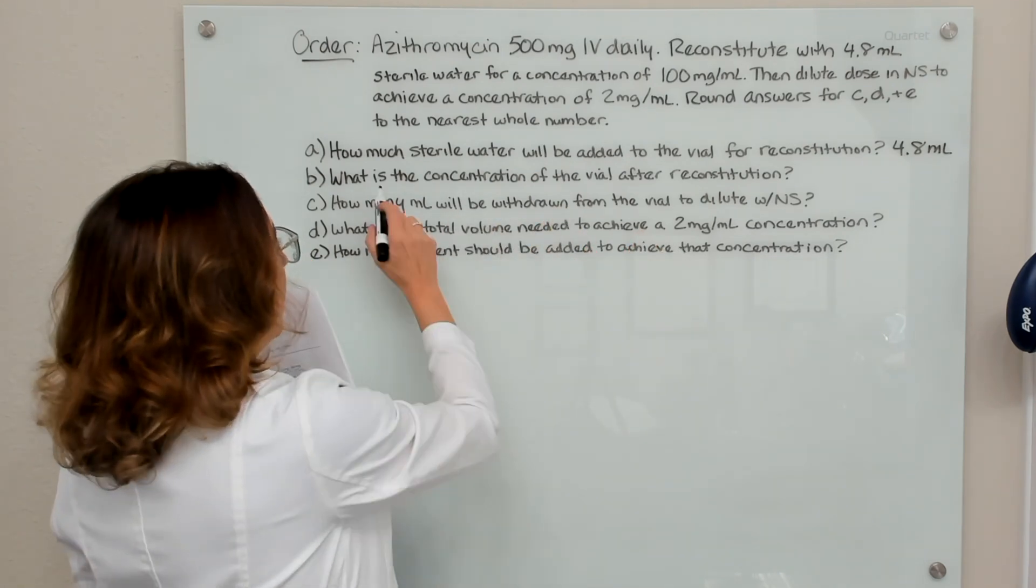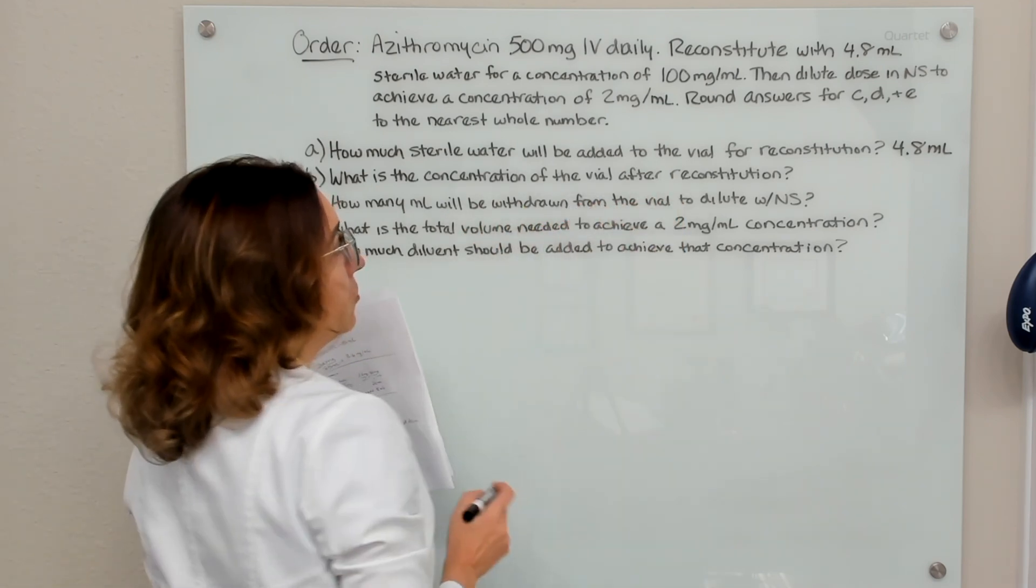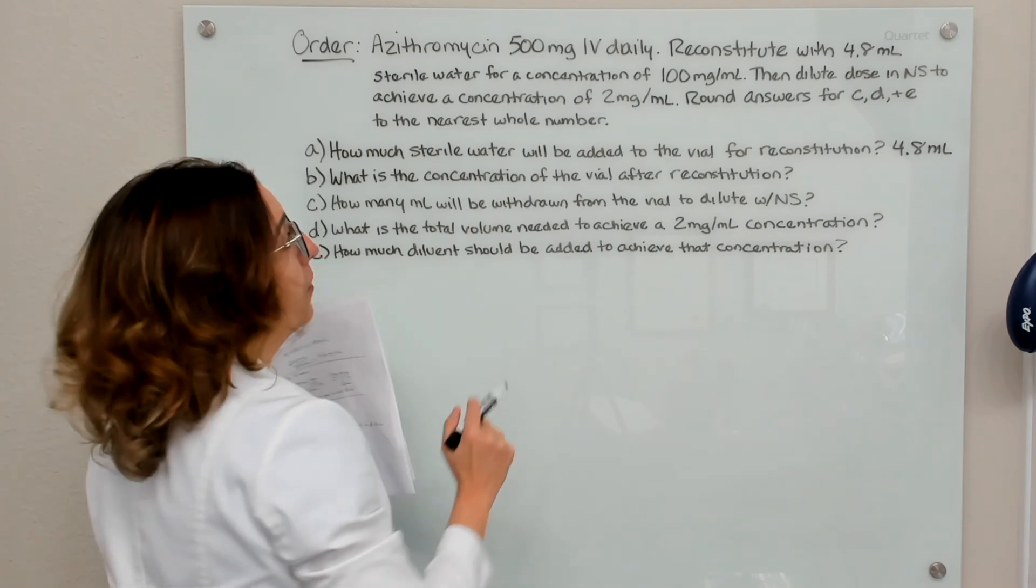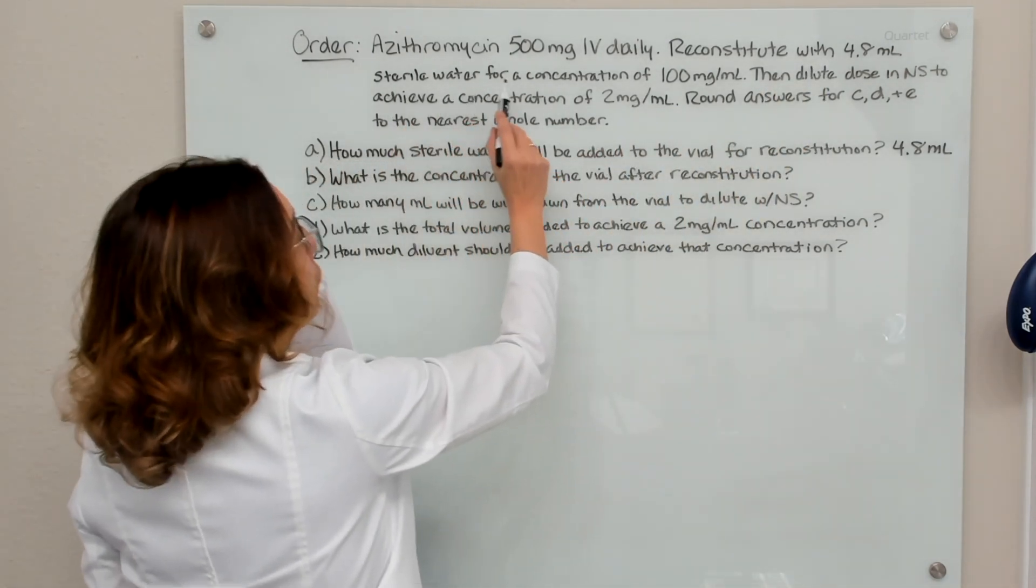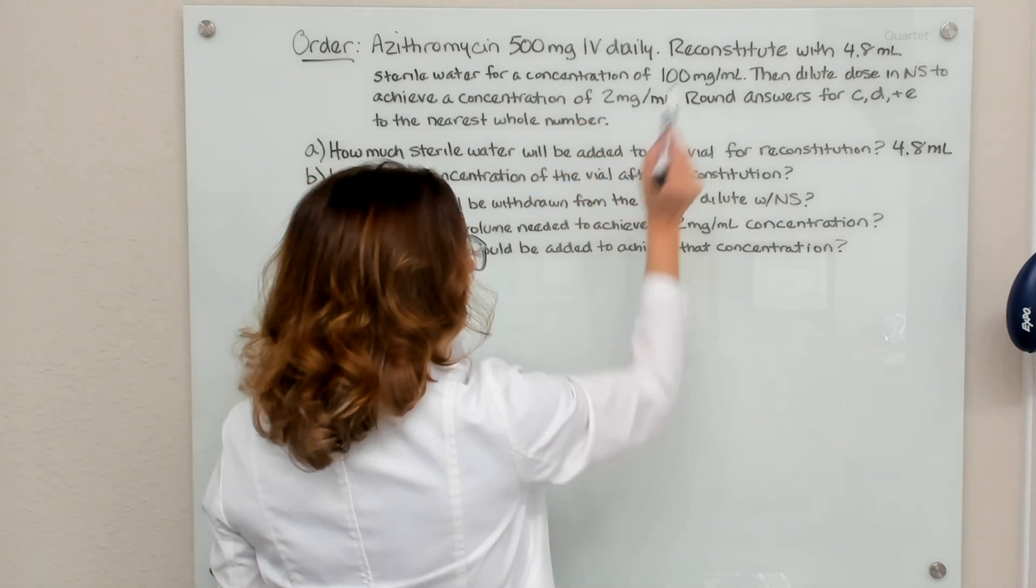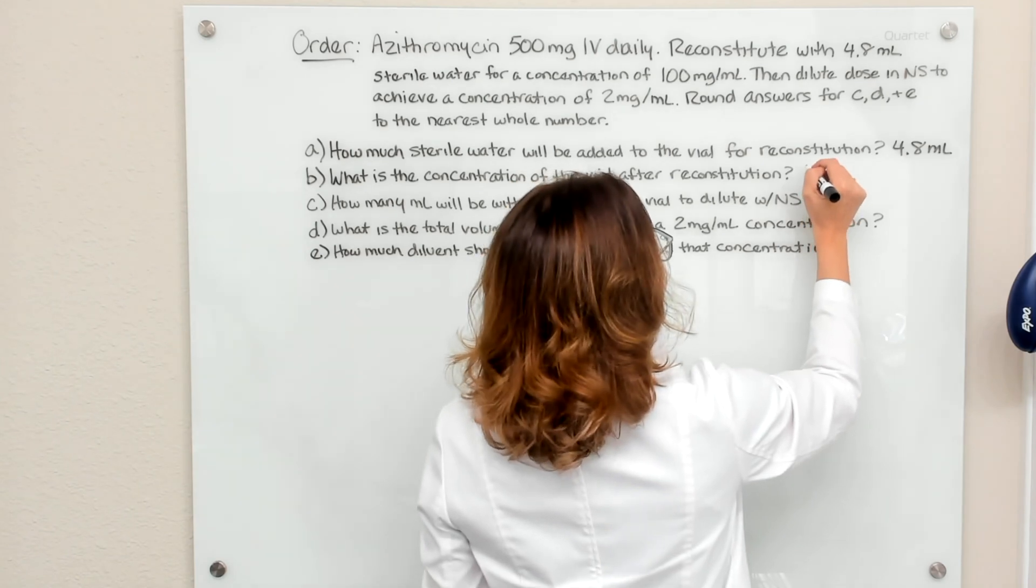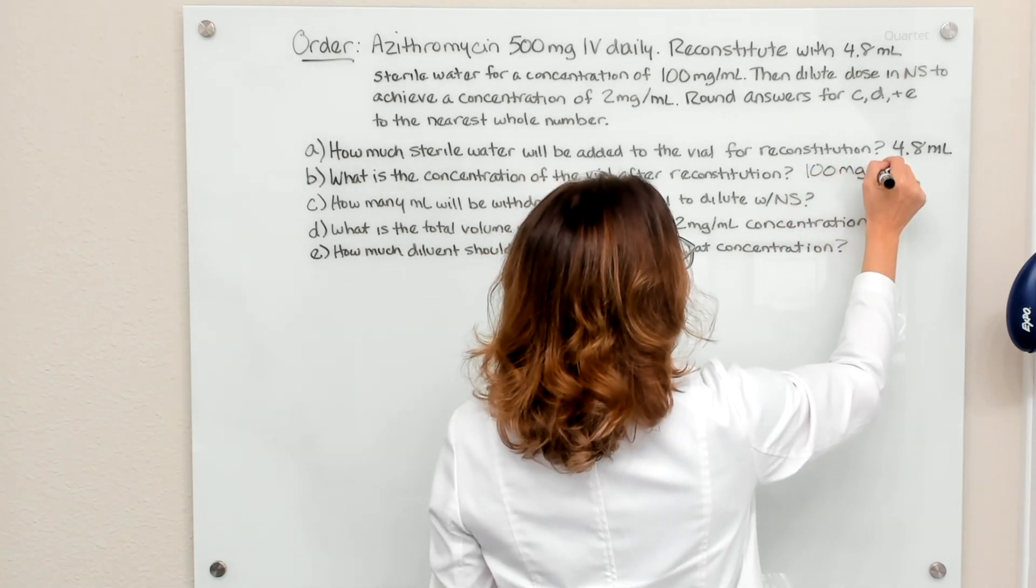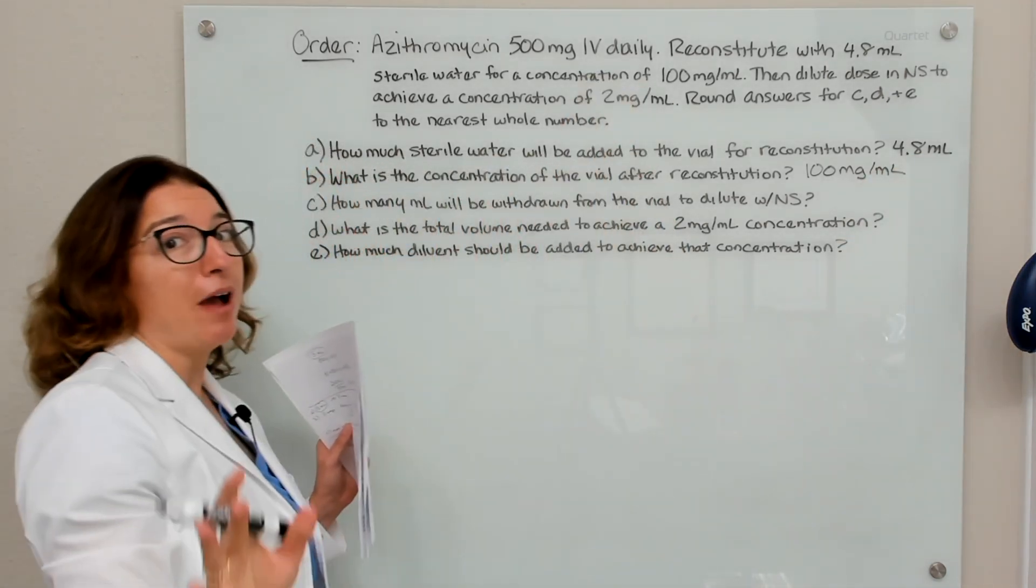And then what is the concentration of the vial after reconstitution? Again, we were told that in the question. So it says reconstitute with 4.8 milliliters of sterile water for a concentration of 100 milligrams per ml. So after reconstitution, our concentration is going to be 100 milligrams per ml. Again, I just pulled that out of there. No math required.